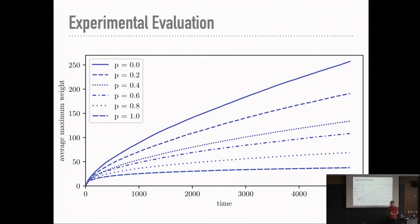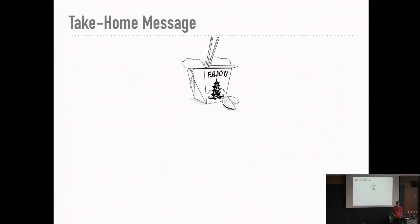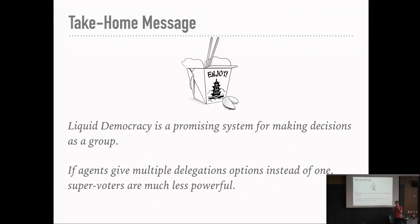What would I like you to take home from this talk? Two things. First of all, I hope that you believe me that liquid democracy is a fascinating thing to study, but also a fascinating way of actually taking decisions as a group. And while I also hope that it came across that super voters can be a problem, I hope that I made it plausible that by giving people the option to give multiple delegations, we can ameliorate this problem. Thank you very much. I'm looking forward to more questions.